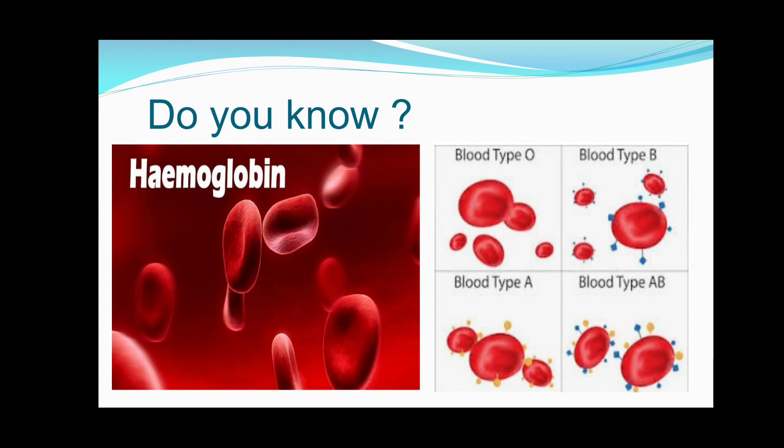Blood is red in color because hemoglobin, which contains iron, gives blood its red color. Insects have blue, green, or colorless blood because their blood does not contain hemoglobin. Humans have four types of blood groups.